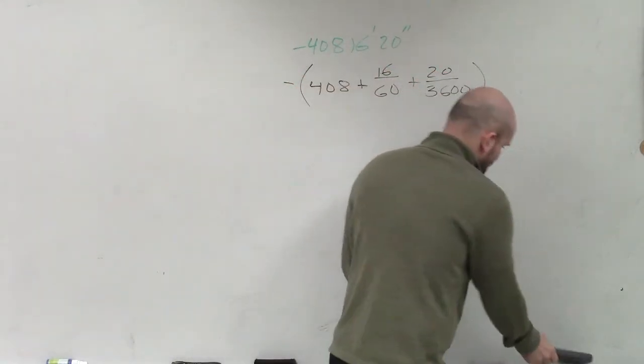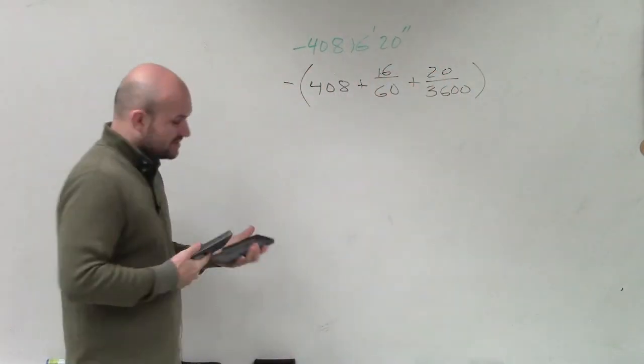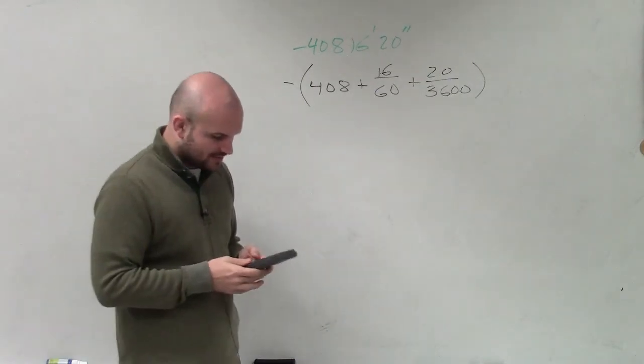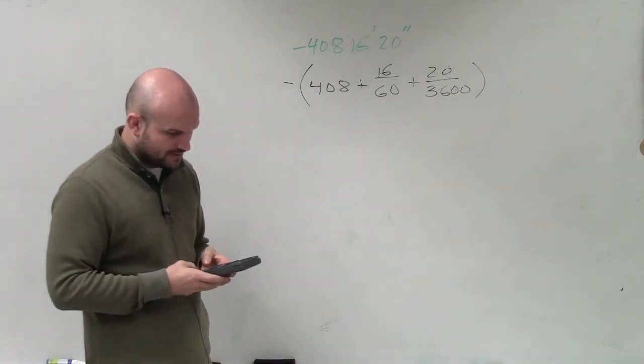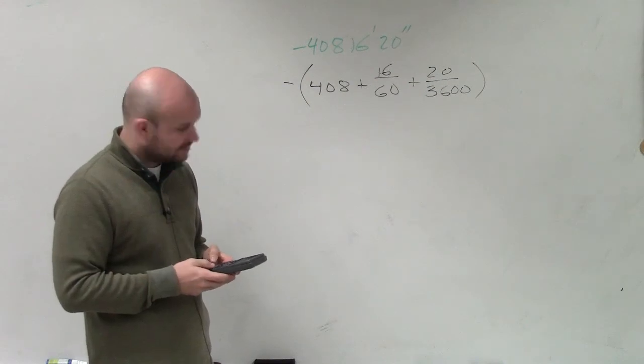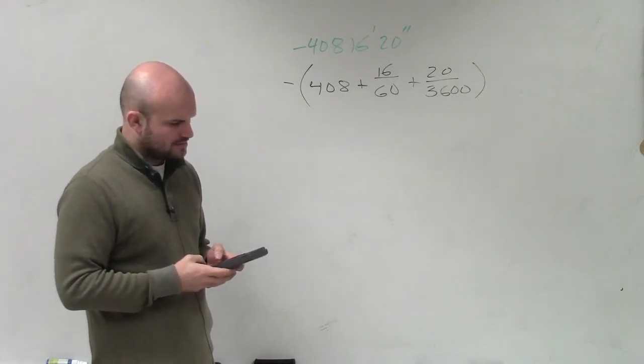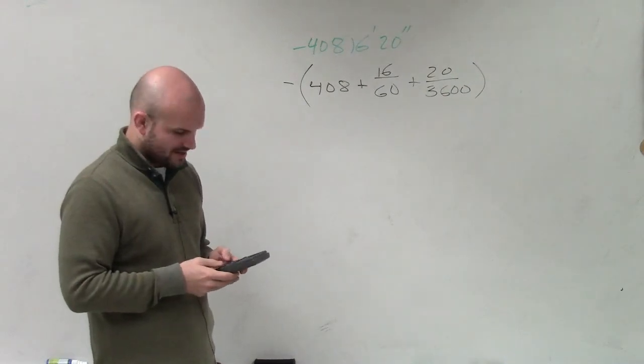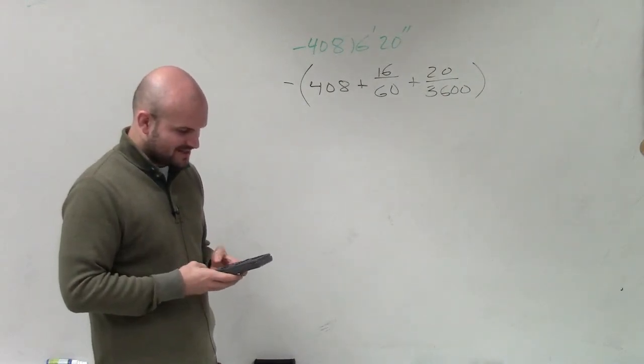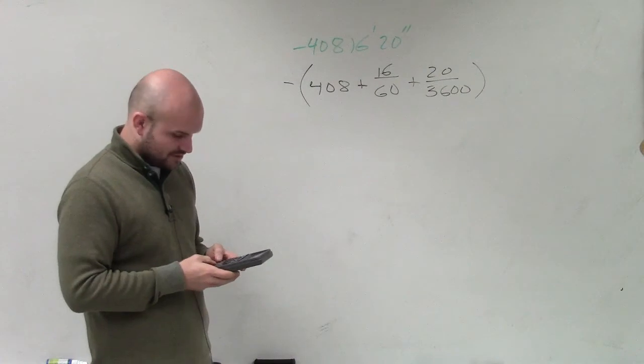you can simply just take your fractions and just do 16 divided by 20 and then add that to 20 divided by 3,600. I'm sorry, I wrote that wrong. 16 divided by 60 and then add that to 20 divided by 3,600.